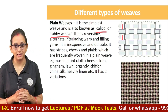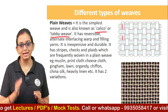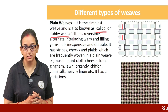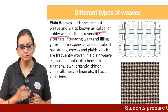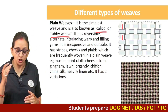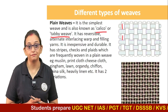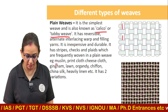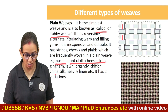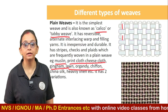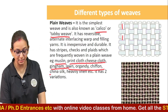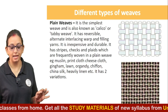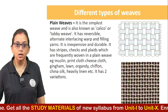Plain weave is basically an alternate interlacing between the warp and the weft threads. It is the most inexpensive and the most durable kind of weave. It has stripes, checks, and plaids which are usually woven on this kind of fabric. Generally the fabrics used are muslin, print cloth, cheesecloth, gingham, lawn, gandhi, chiffon, or china silk.